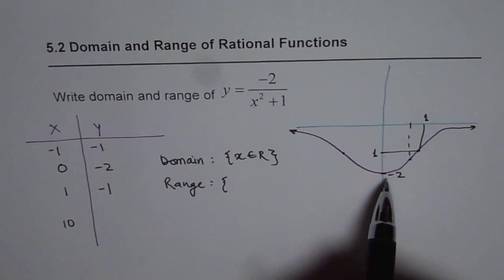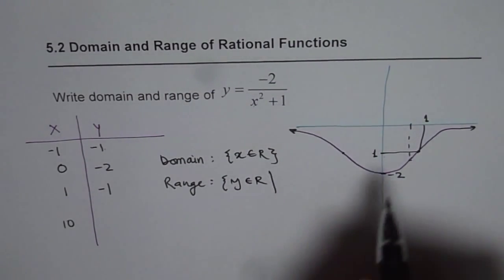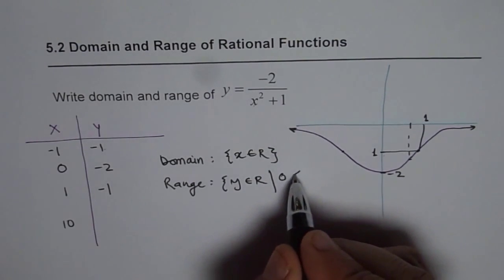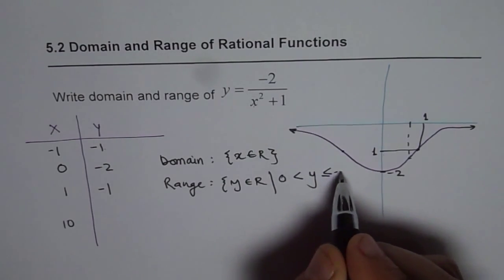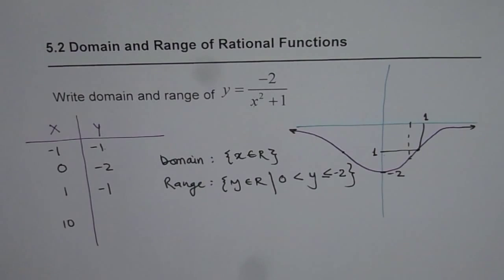Now range for this particular function as you can see is y belongs to real numbers and y is greater than 0, y is greater than 0. It is never equal to but less than equal to minus 2. So it is between two values. And therefore you can see rational functions range at times can be bound from both the sides. Unlike the polynomial functions.